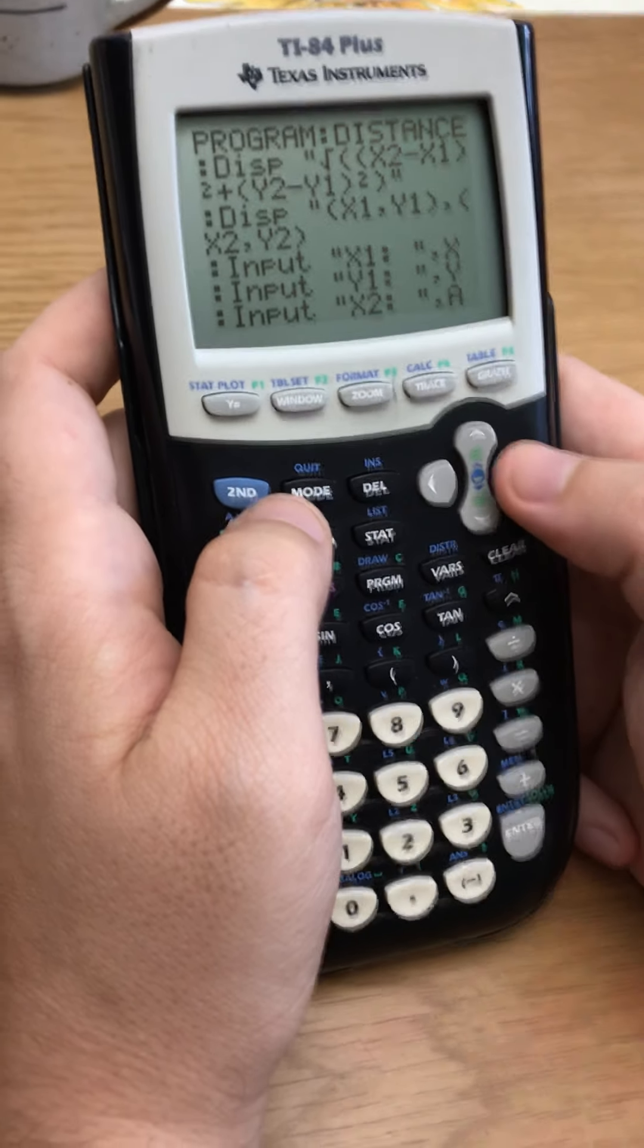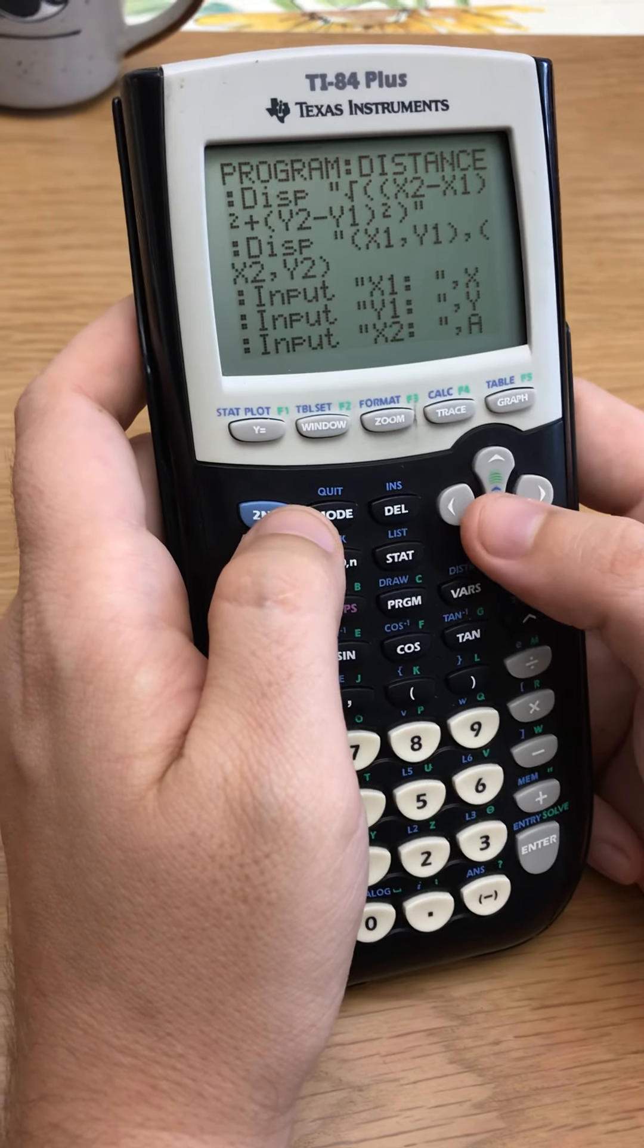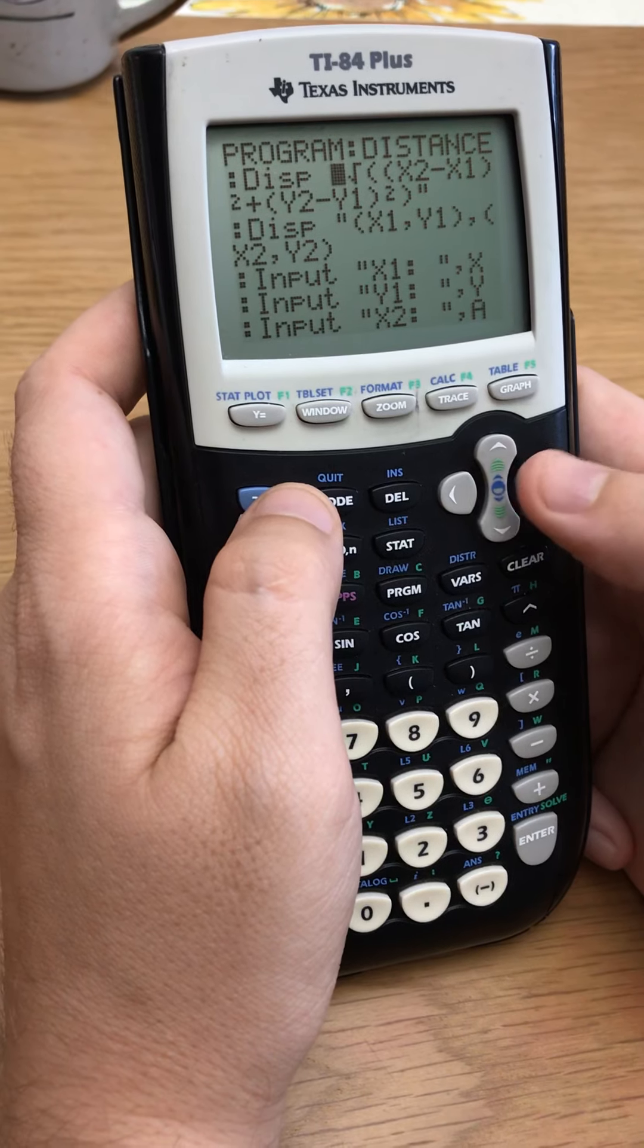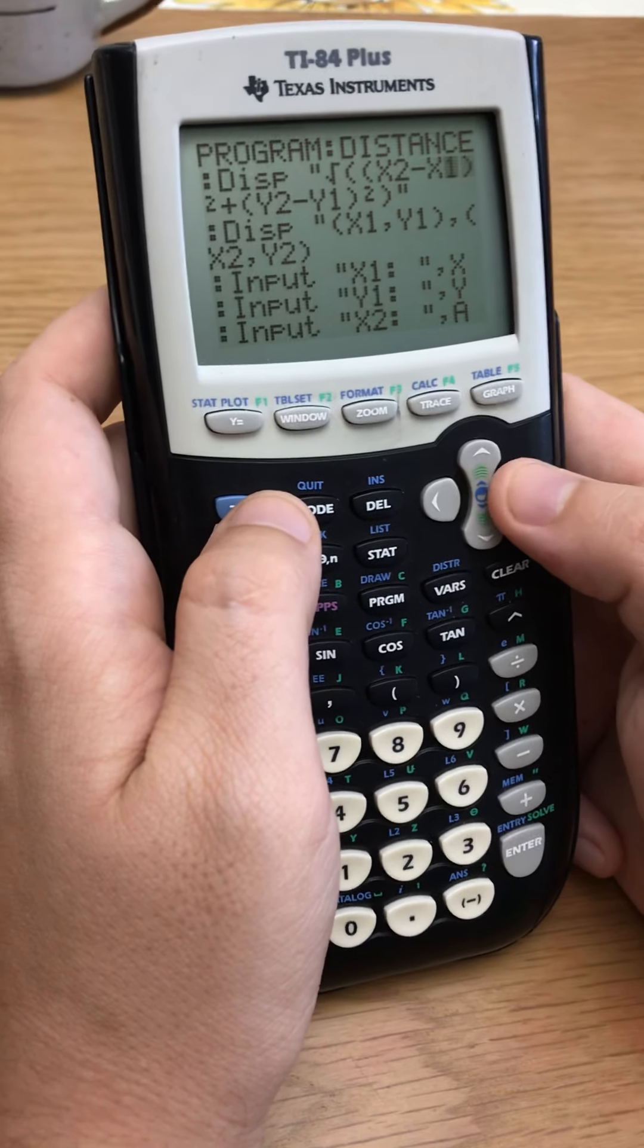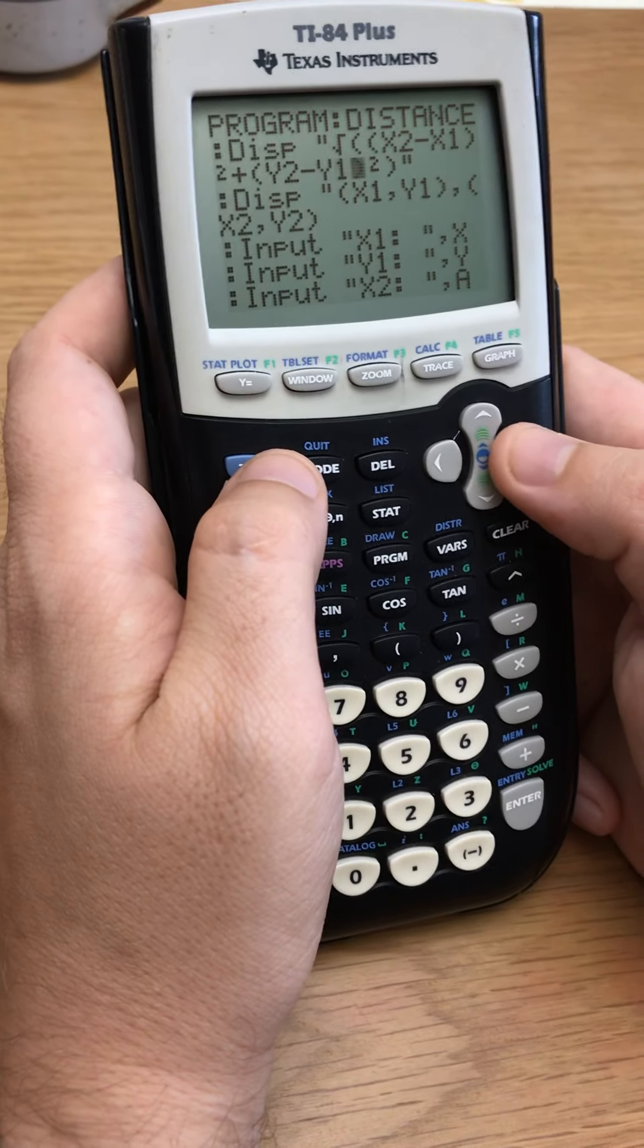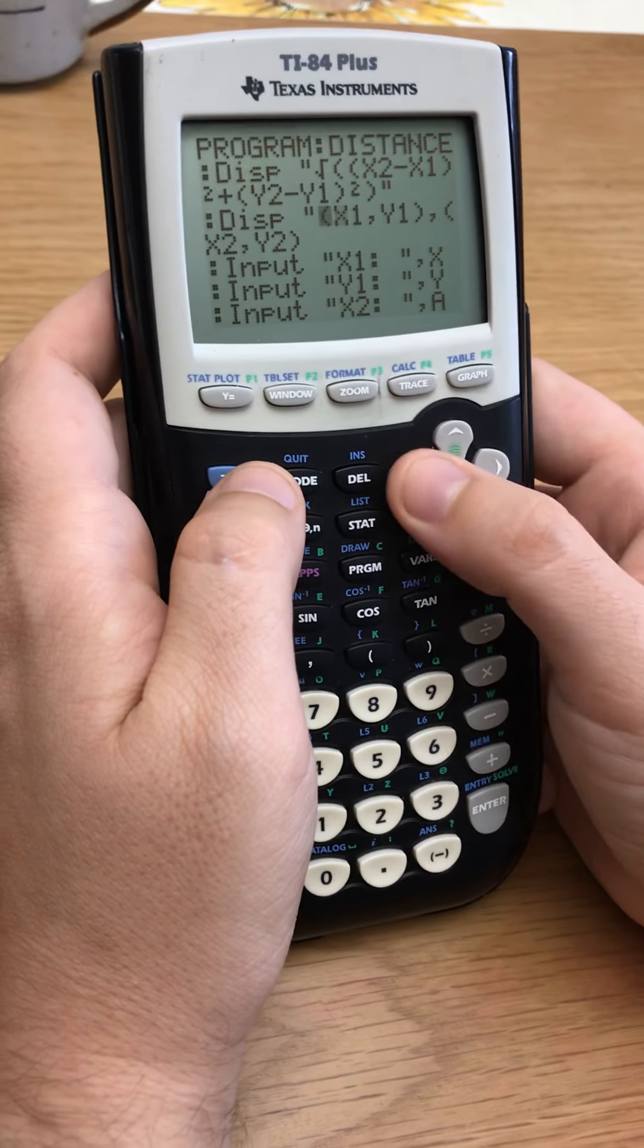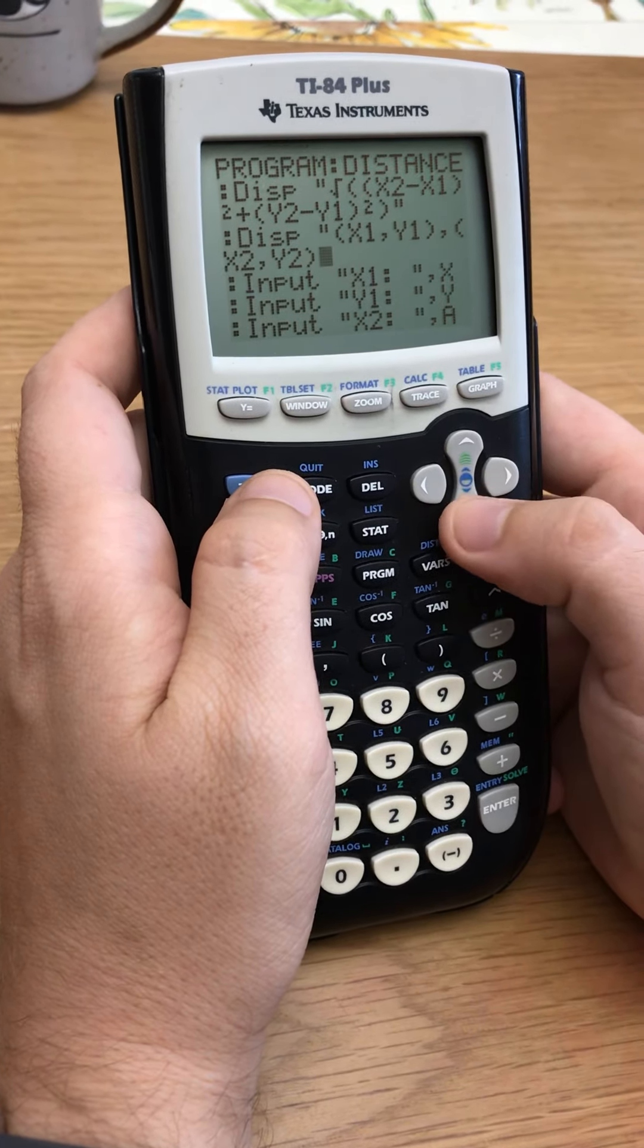You start off with display. Make sure you put quotations around it, otherwise it won't display this thing. It'll come up with an error message. Display, parentheses, and then your formula. So here's my long formula and then I end it with parentheses as well. And then I display the actual points that I want, x1, y1, x2, y2.